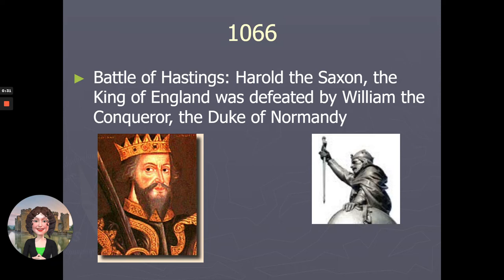The Battle of Hastings in 1066 is when Harold the Saxon, at the time the King of England, was defeated by William the Conqueror, the Duke of Normandy. This is really the beginning of what we know as a more unified England, a less tribal England — England under one monarch.